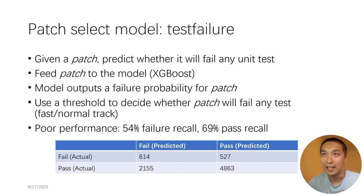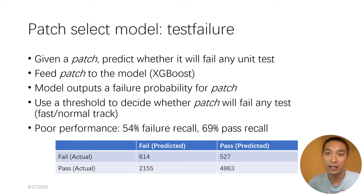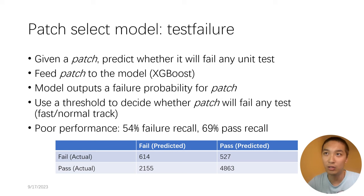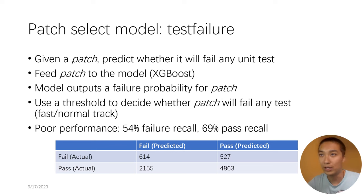As a result, Test Failure is proposed to predict whether a patch should fail any unit test — in other words, this model classifies every patch into high-risk or low-risk. In this model, only the patch features are considered, and the model outputs a failure probability for the overall patch. Similar to the Test Label Select model, Test Failure also uses a threshold to decide whether a patch will fail any test. If so, it will be put in the fast track; otherwise it remains in the normal track. In terms of performance, its fail recall and pass recall are both pretty low.